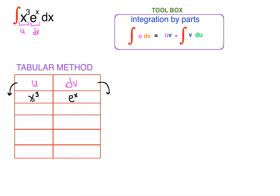The derivative of x cubed is 3x squared by the power rule. The derivative of 3x squared is 6x. The derivative of 6x is 6. The derivative of 6 is 0 — whenever you reach 0, you are done. For the dv column, the anti-derivative of e to the x is e to the x all the way down, since the anti-derivative of e to the x is always e to the x.